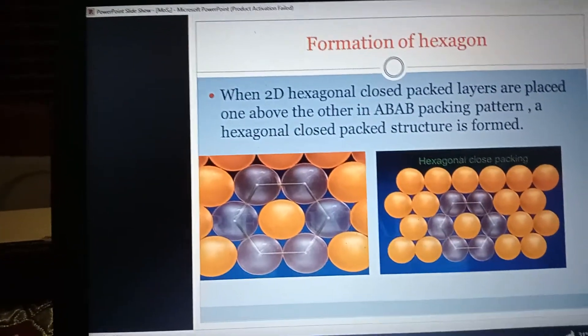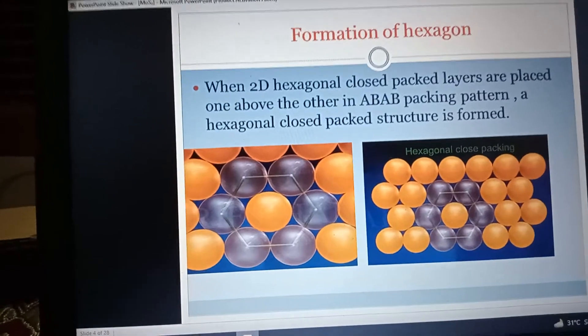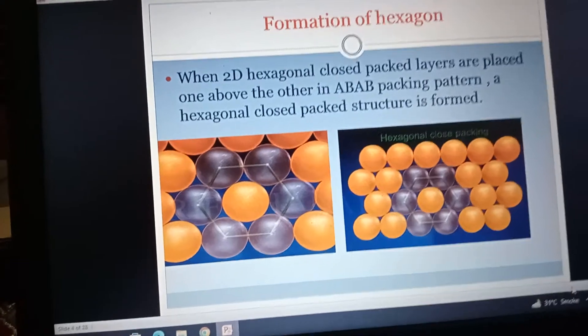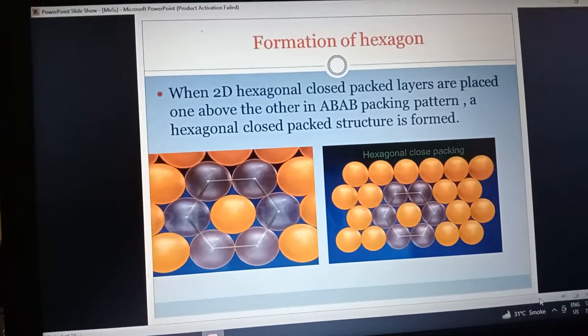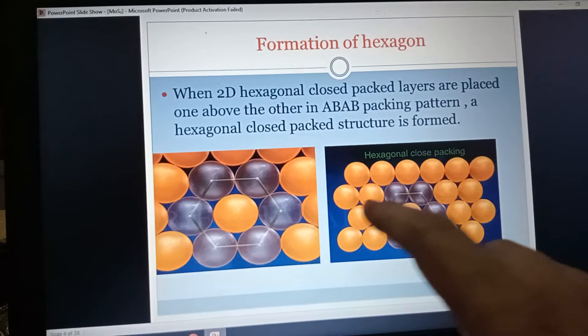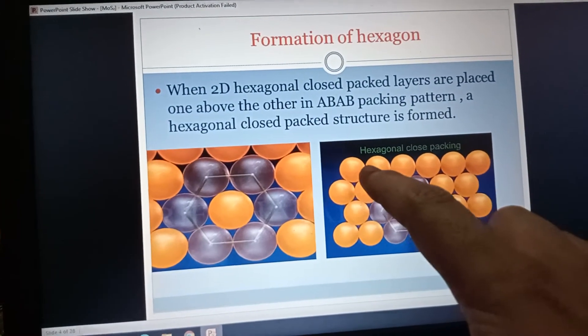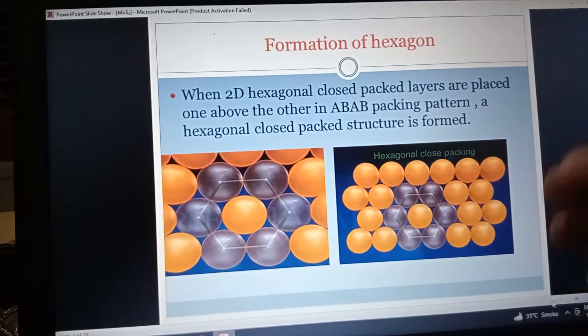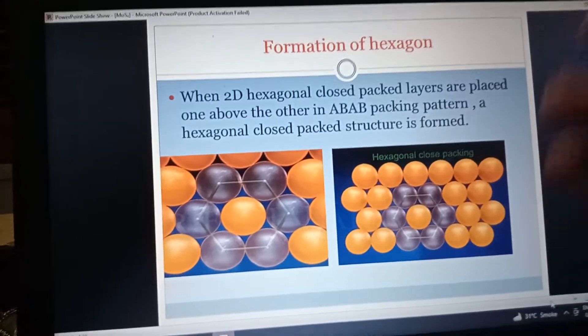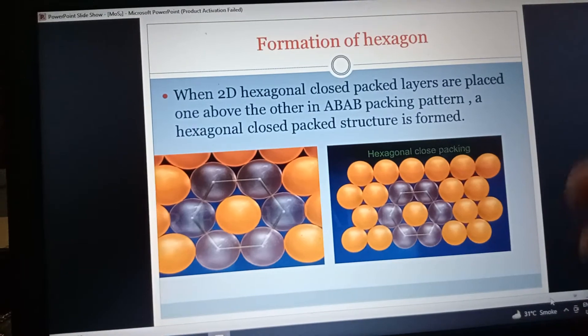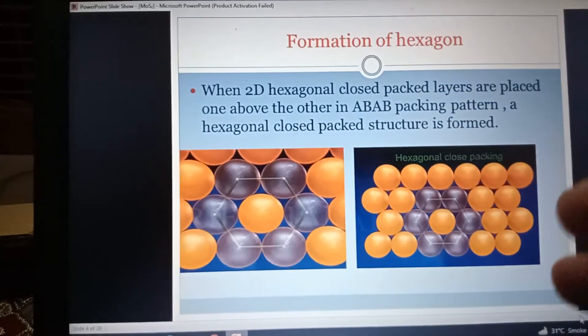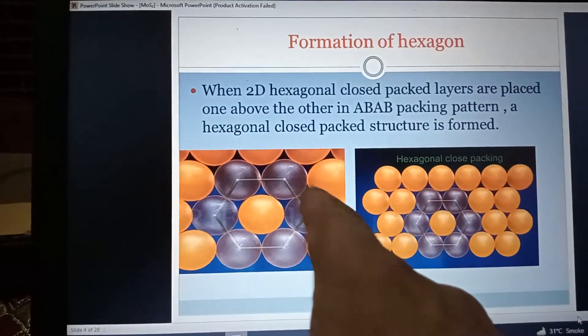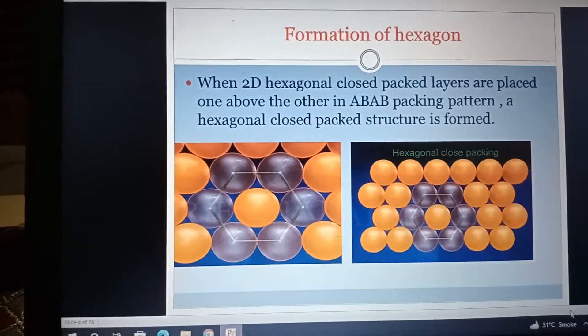Formation of hexagon: when 2D, two-dimensional hexagonal close packed layers are placed one above the other in ABAB packing pattern, a hexagonal close packing structure is formed. The layers are in ABAB. Let's suppose first was A, second is B, then is A and then is B. The hexagonal structure is formed. You can see this, which is called hexagonal structure, which means 6 sides.